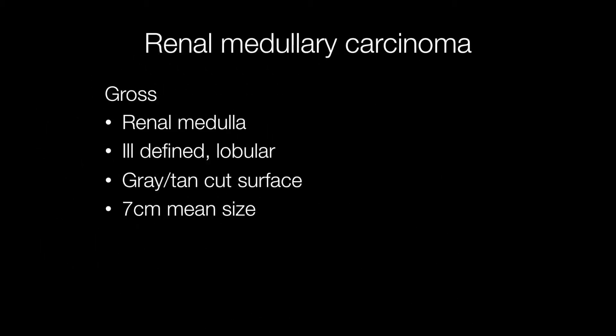Grossly, these tumours are ill-defined with a lobulated outline. The cut surface is typically grey or tan and the average size is around 7cm at presentation. In addition, deposits of tumour are frequently found in the renal sinus fat and perinephric fat.